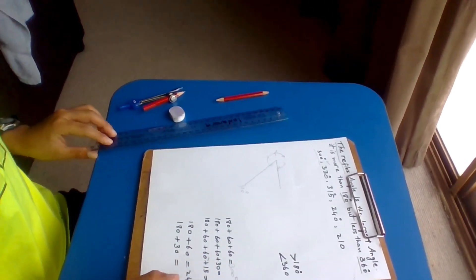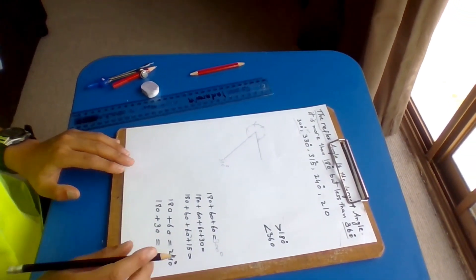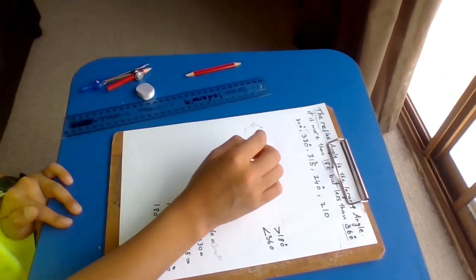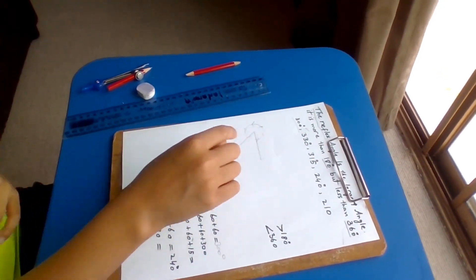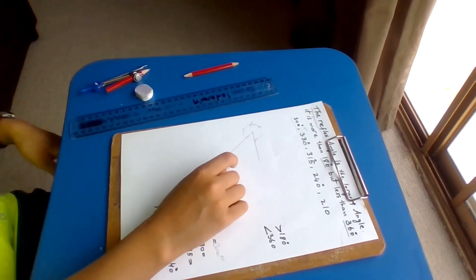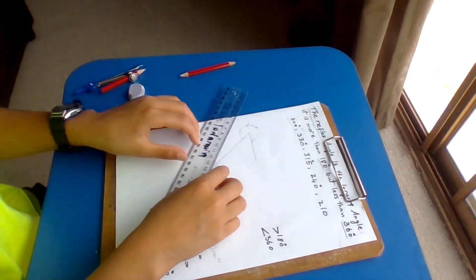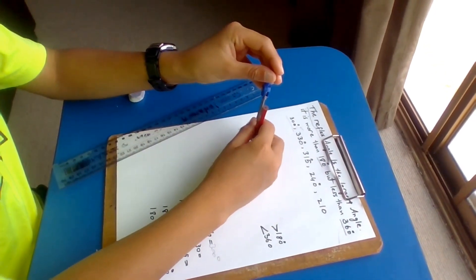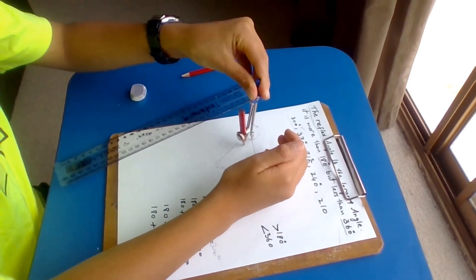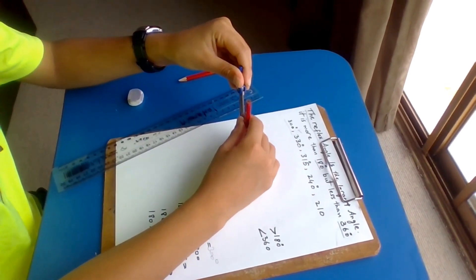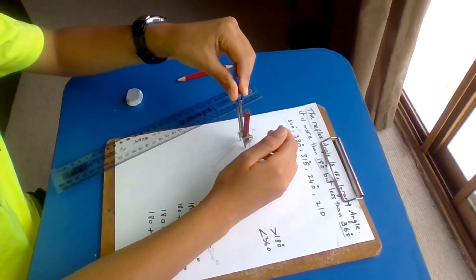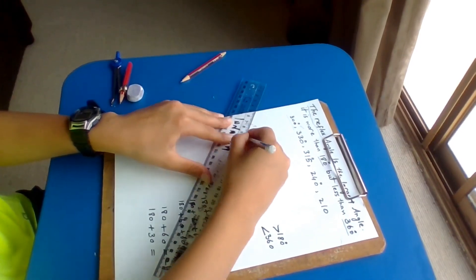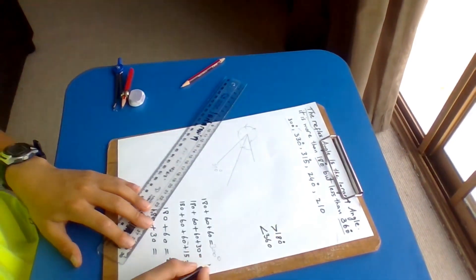The next one we're going to do is 230 degrees. If you want to make 230 degrees, you have to do 200 degrees first, then 260, because 230 is between 200 degrees and 260 degrees. We go to this point and draw an arc, then go to this point and draw another arc. So this is 230 degrees. Done.